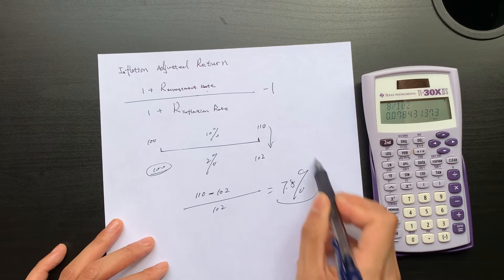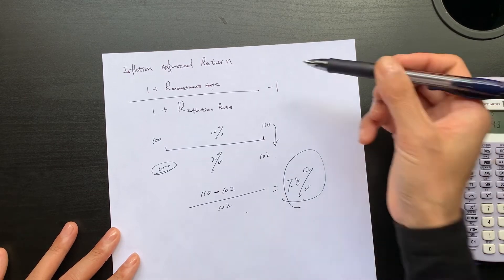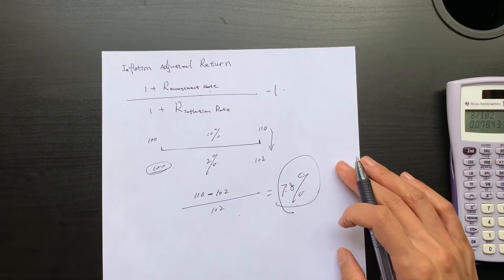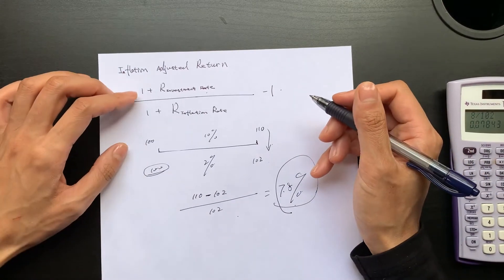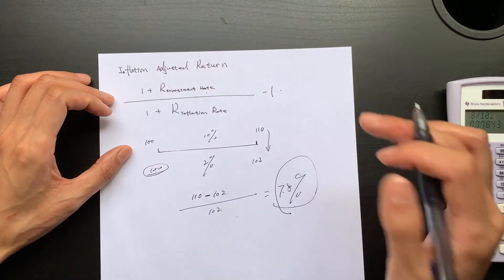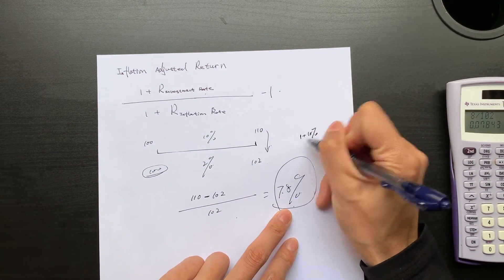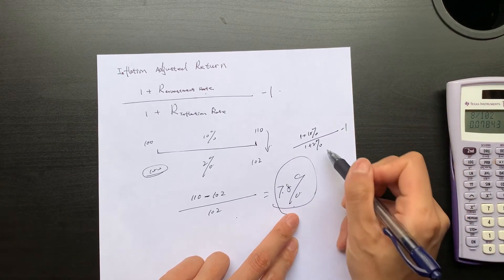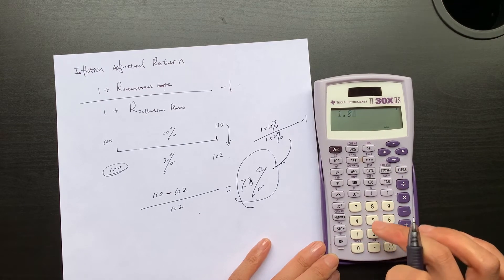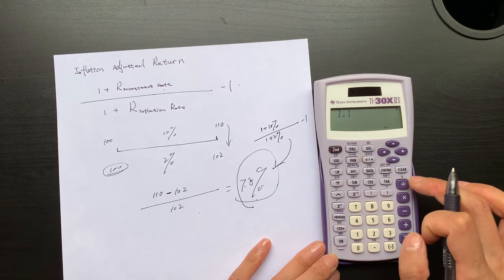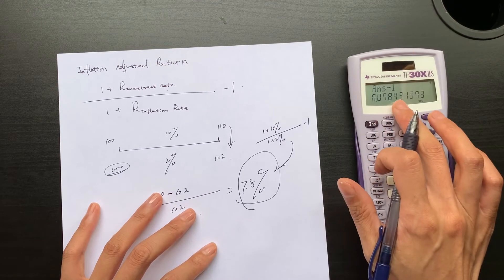So this 7.8% should be your inflation-adjusted return. But why? We can confirm that. Before I derive why this formula makes sense, we can just confirm it. If I don't go through this step, I simply say my investment return is 10%, my inflation rate is 2%. Then 1.1 divided by 1.02, then minus one—you can see it is exactly equal to 7.8%.